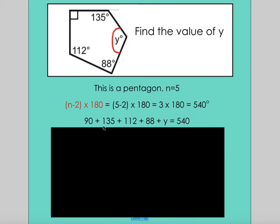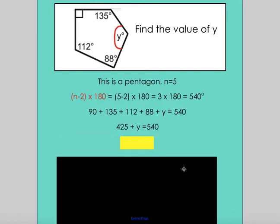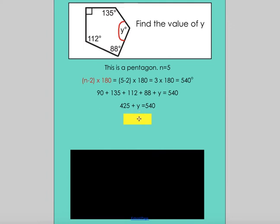I can simplify this equation on the left-hand side by adding all of the like terms, which are the numbers. So if I add all of the numbers, I get 525 plus y equals 540. Now this is a simple linear equation. You can ask yourself, what do I add to 525 to get 540? And the answer is y equals 115. So that is the value of this angle, which is called y in this problem.